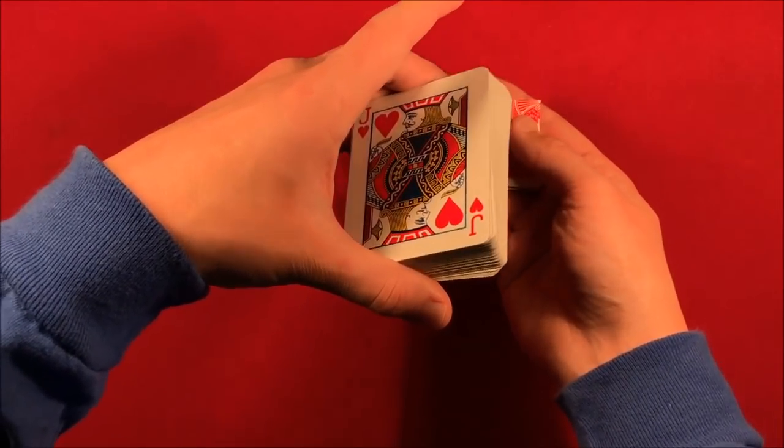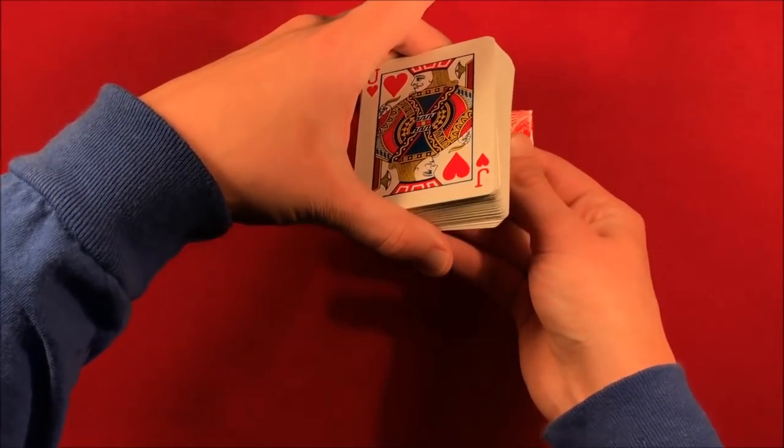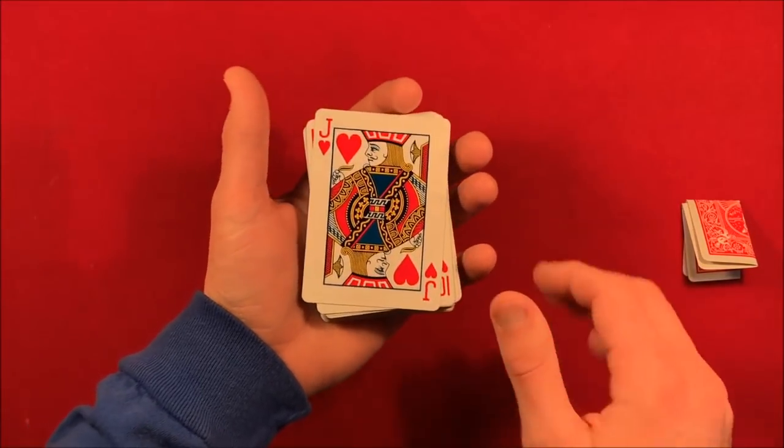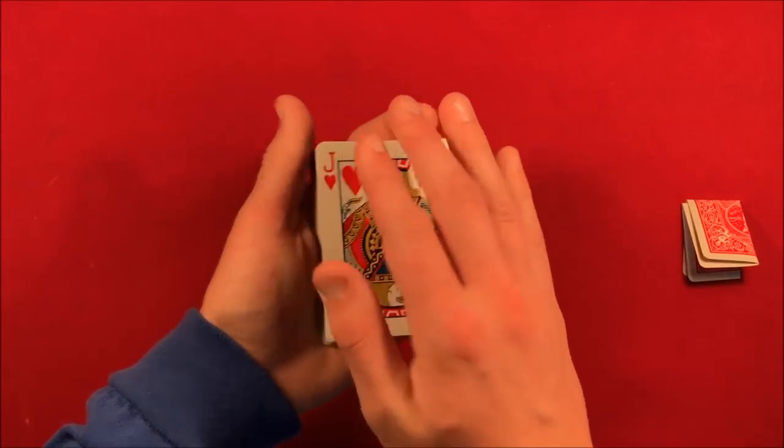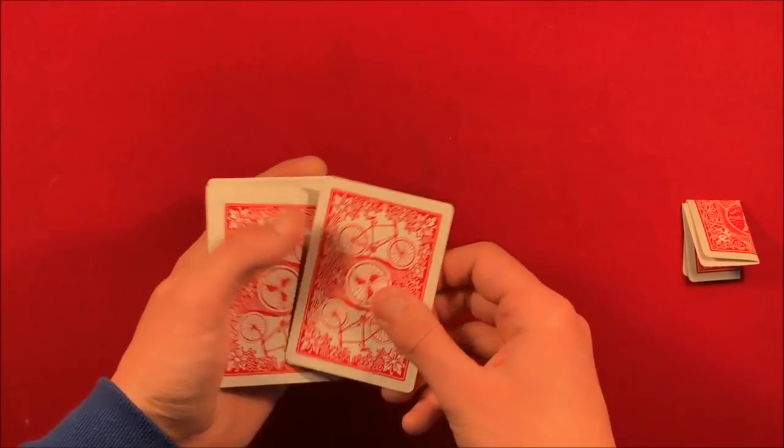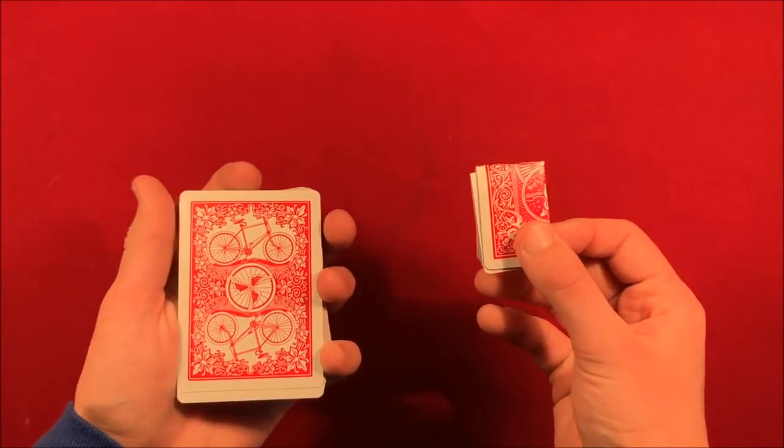Obviously he does this a lot better than I do, but essentially he's just putting it underneath the watch. He puts the deck on top, he sticks this card under her watch. She's holding this deck with both of her hands. From there, he has the spectator call out 13 cards, but obviously the card is under her watch the whole time.